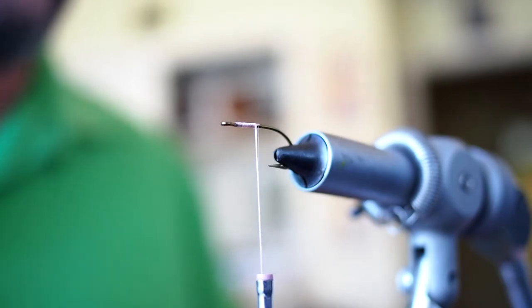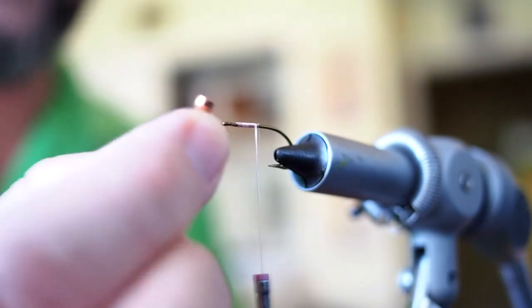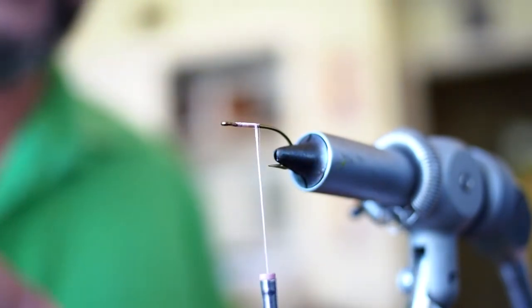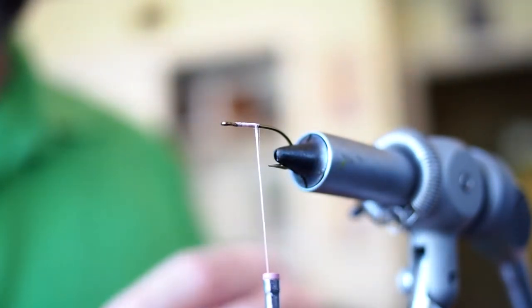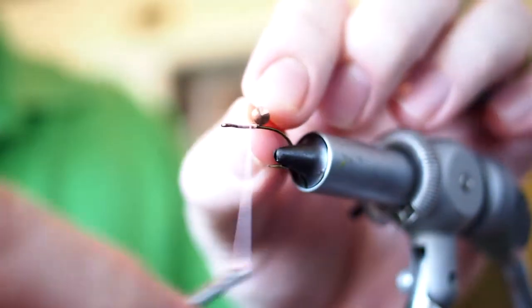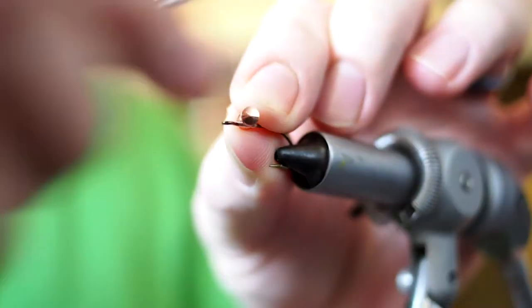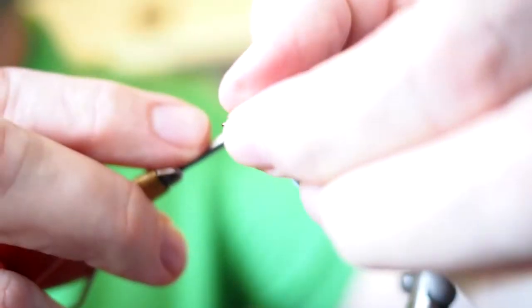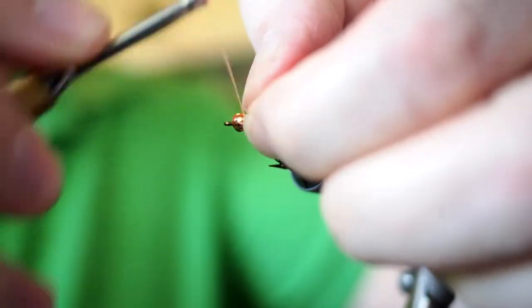I'll tie this pattern in 6s, 8s, and 10s. Generally on all of those sizes, I will be using 5/32nd or extra small dumbbell eyes. I'm going to be tying this one with gold because supposedly shad love gold. I've also caught plenty of them on just plain lead presentation eyes or silver or black. Let's see if it makes any difference this year.